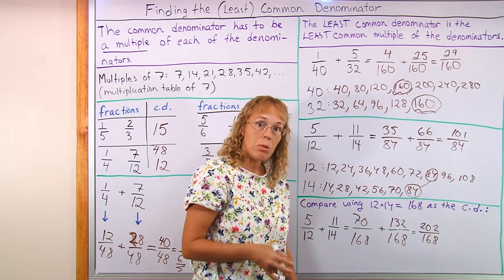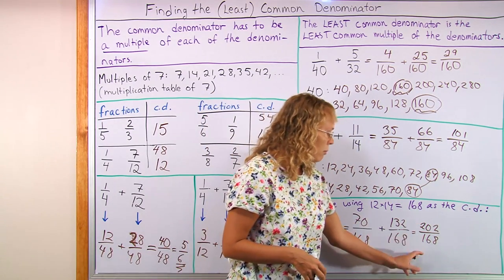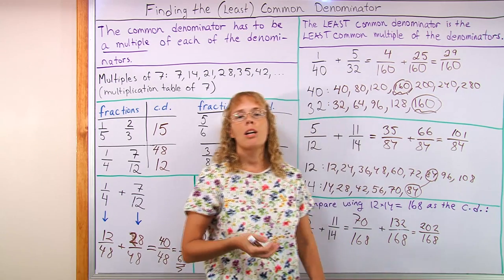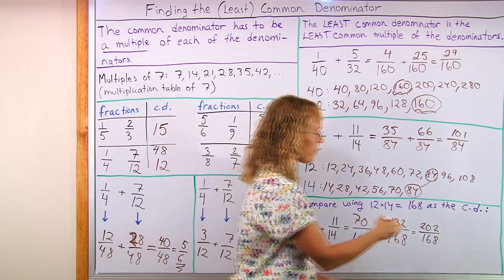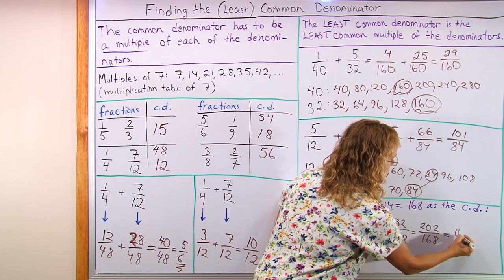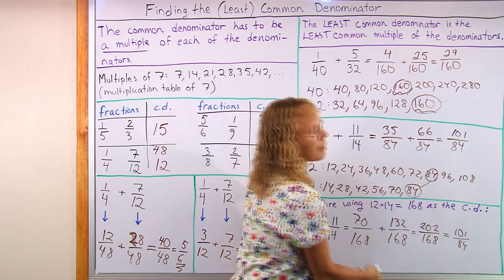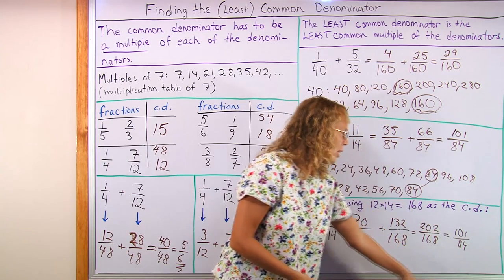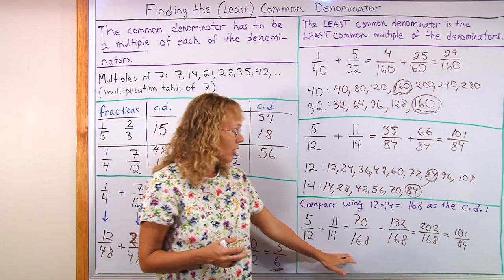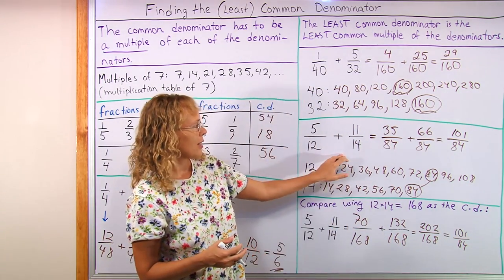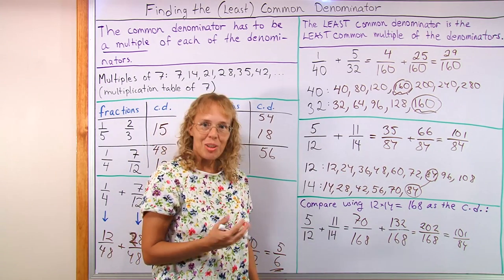And now we have the trouble of simplifying. Both of these numbers are even numbers, so I will first simplify by 2. Divide both by 2 to get 101 over 84. And that doesn't simplify any further. So I got the same answer. And I personally feel this is actually less work than this. But it's your pick.